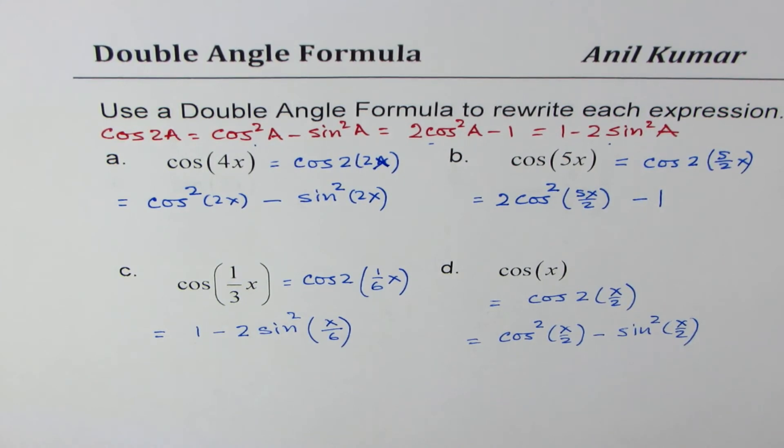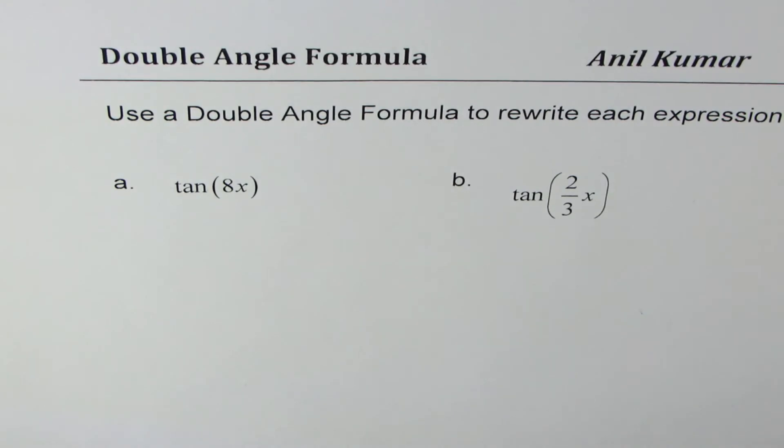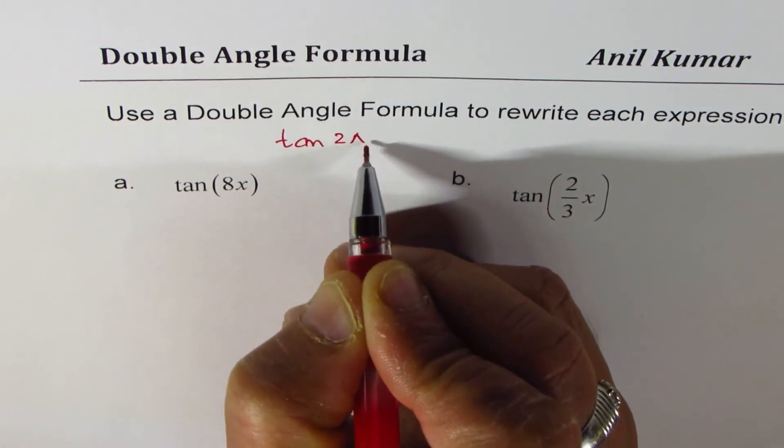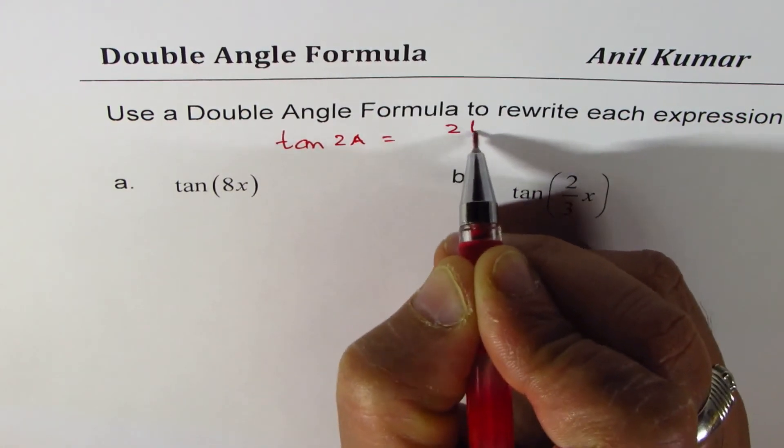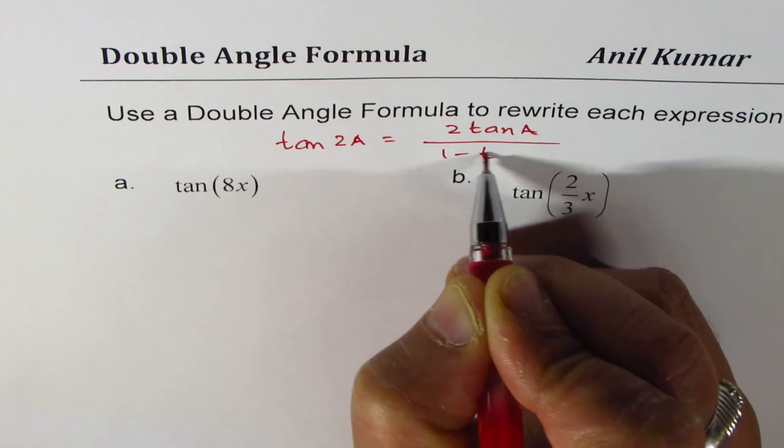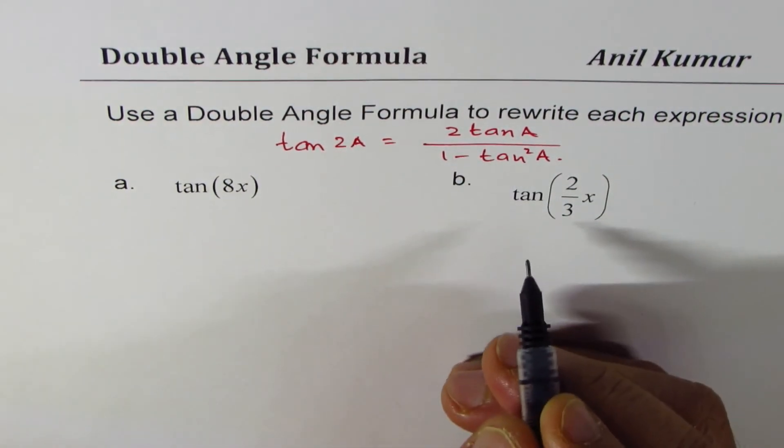All three are double angle formulas. So, let's take a few examples with tan also. So, here we have two examples with tan, and as you know, tan 2a is equal to 2 tan a divided by 1 minus tan square a. So, we'll use this formula in both the cases.